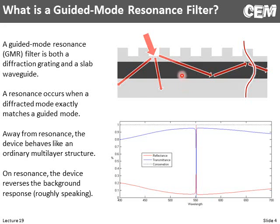Under very, very special circumstances, one of these diffracted modes matches exactly a guided mode, and we can couple energy from the external wave into a guided mode. When that happens, we establish this magical thing called a guided mode resonance. When we're not diffracting into a guided mode, the wave really just sees this as a multi-layer structure like you'd calculate with transfer matrix method, and we get this background response. The red line is reflectance, blue line is transmittance.